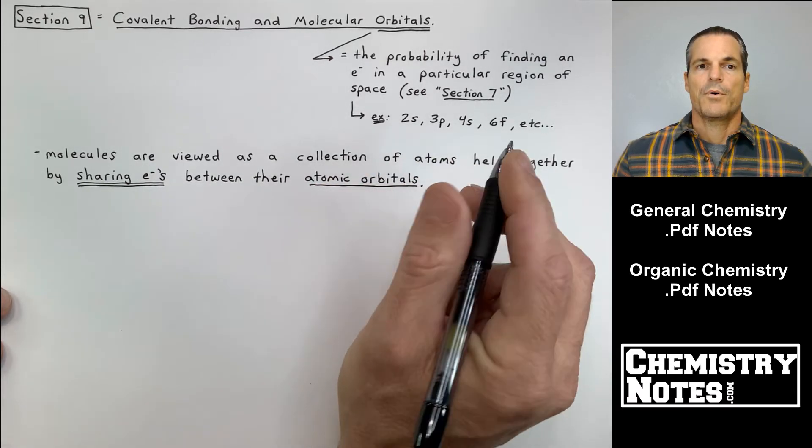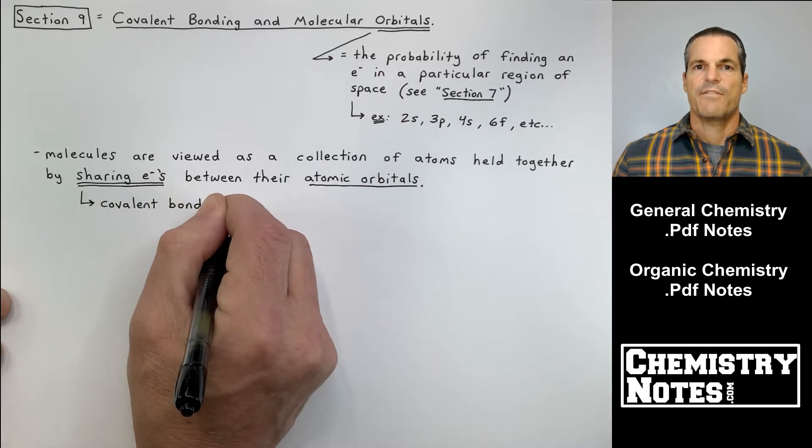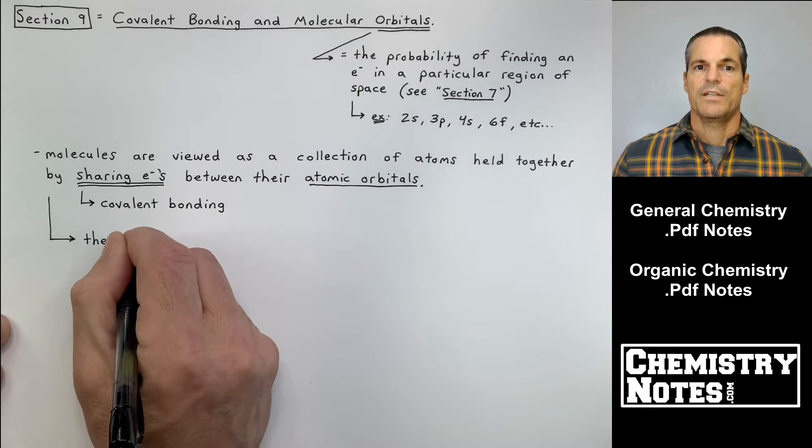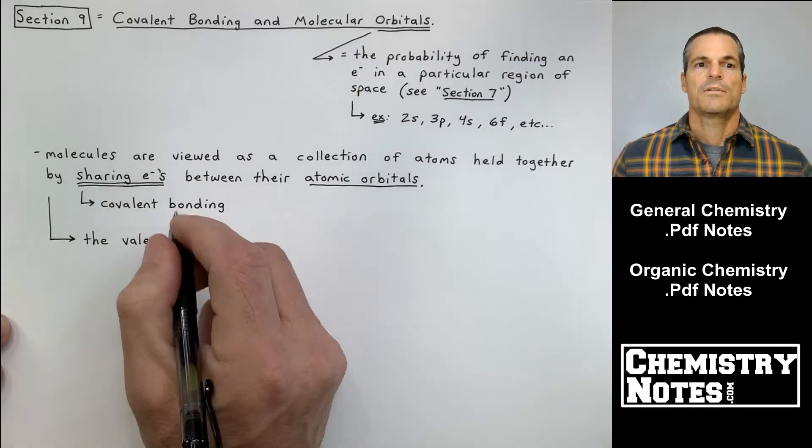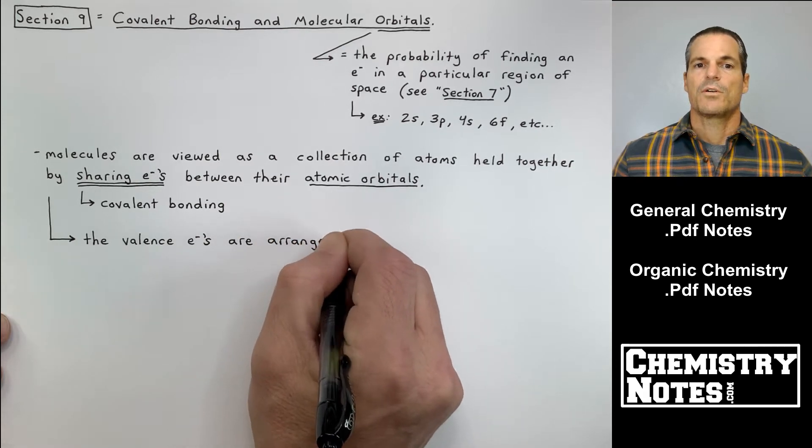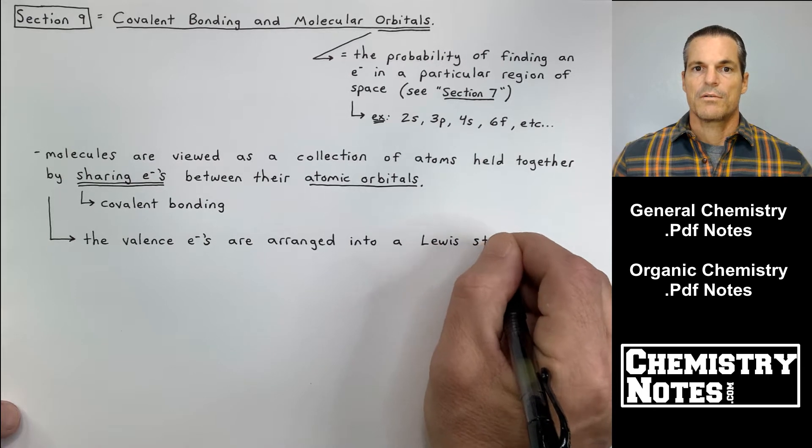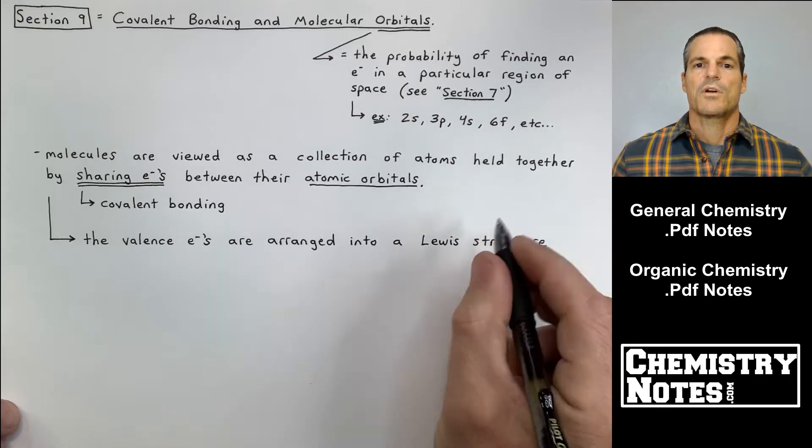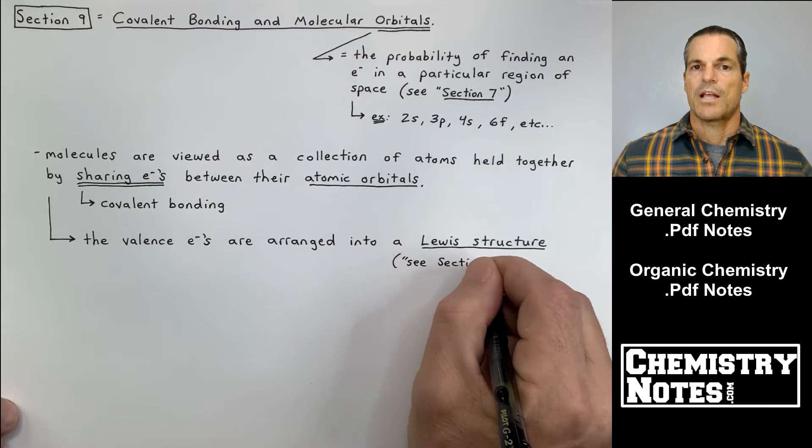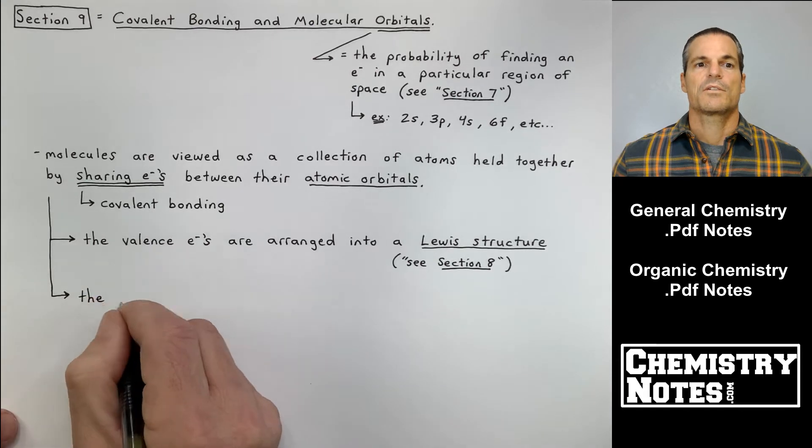The first bullet point says molecules are viewed as a collection of atoms held together by sharing electrons between their atomic orbitals. Remember, sharing electrons is covalent bonding. Valence electrons are arranged into something called a Lewis structure, and the Lewis structure is what we talked about in section 8. We talked extensively about how to draw Lewis structures and the five rules for drawing them.